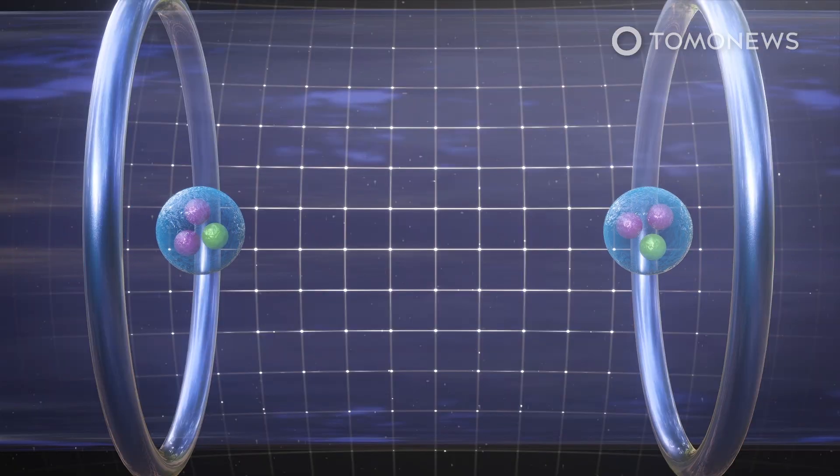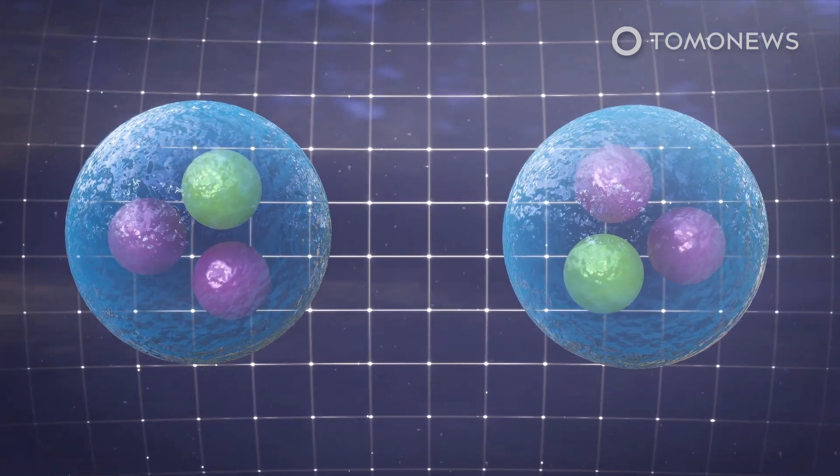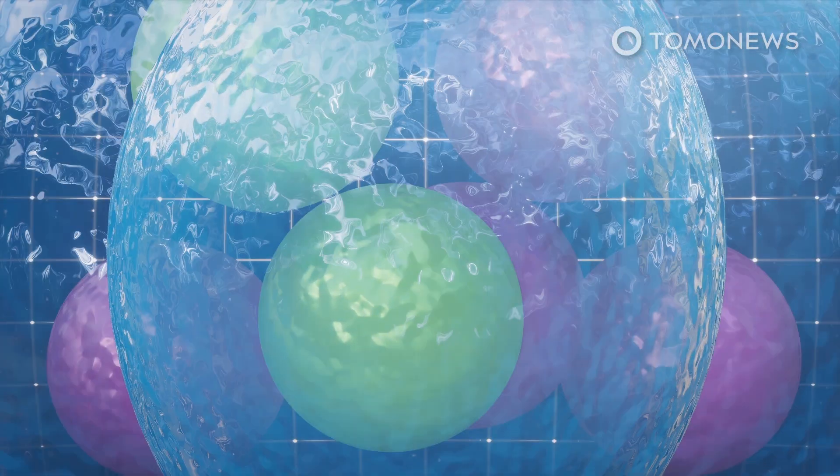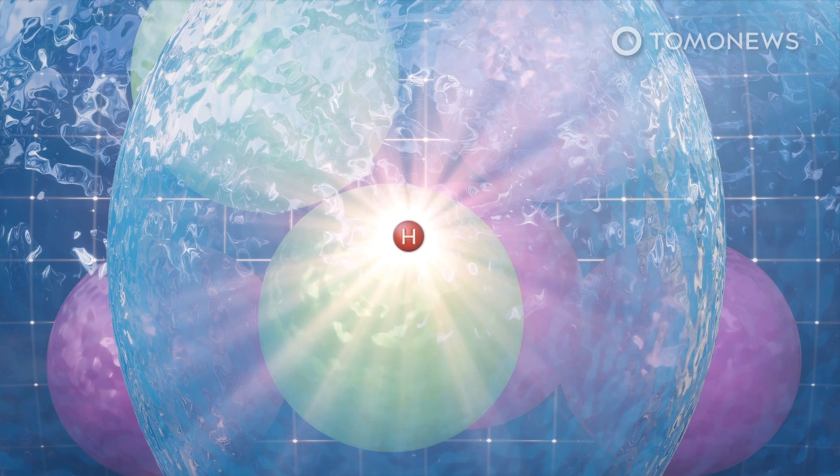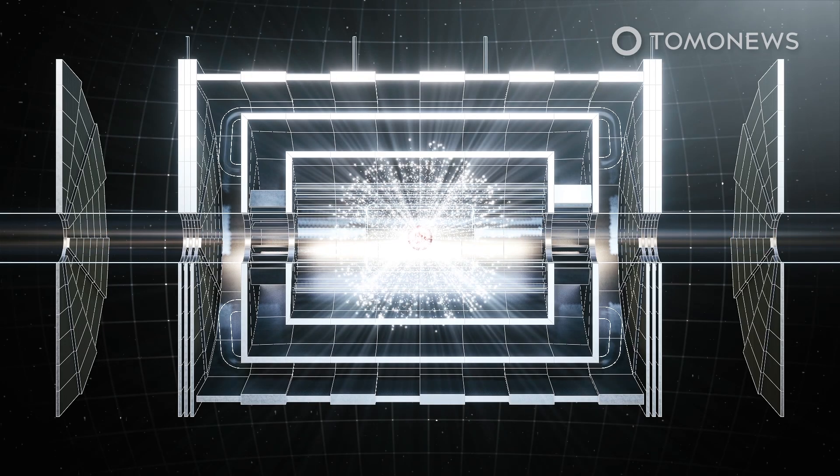The particle was discovered by sending protons racing around the world's largest particle accelerator at nearly the speed of light. The protons smashed into each other with enough energy to generate a Higgs boson. The existence of the Higgs boson is fleeting, however.